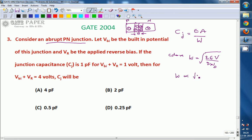Where V consists of built-in potential as well as applied reverse voltage. So W is proportional to square root of VBI plus VR. We are naming it as junction voltage Vj.